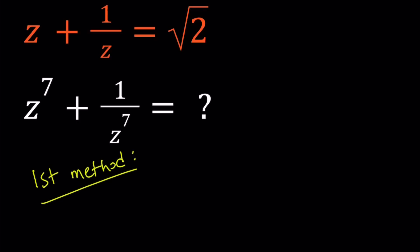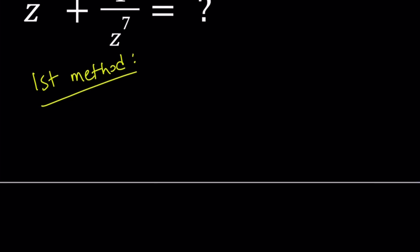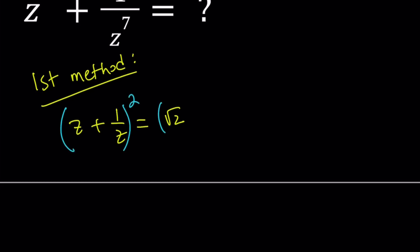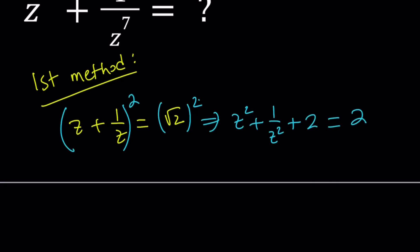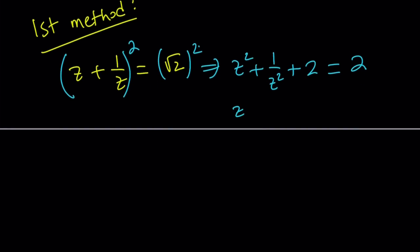For my first method, I'm going to start with z plus 1 over z equals square root of 2, and then square both sides. If I square both sides, I get the following: z squared plus 1 over z squared plus 2ab gives me just 2, because z and 1 over z are reciprocals, and square root of 2 squared is equal to 2. If you subtract 2 from both sides, you get z squared plus 1 over z squared equals 0.